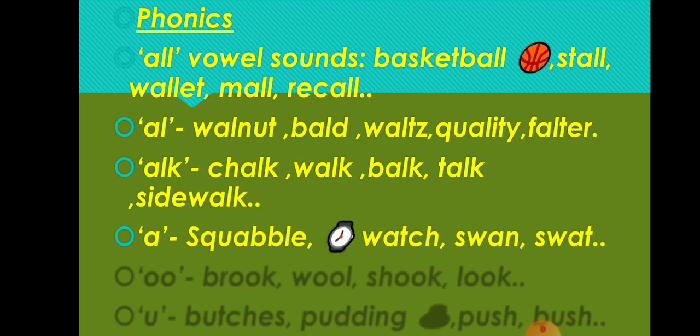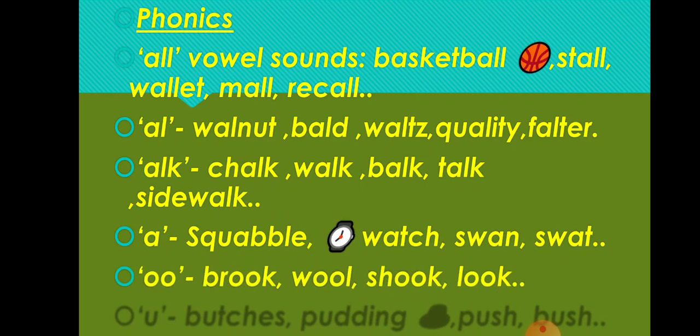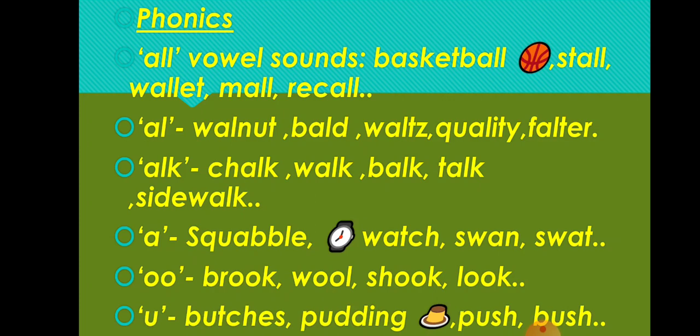Next sounds come to be 'Auk' as in Squabble, Watch, Swan, Swat, etc. Then 'Auk' as in Brook, Oul, Shook, Look. And then 'Oul' as in Putches, Pudding, Push, Bush, etc. These are some short vowel sounds we have come across in unit 5. I have given you some example words. We have more words in our SR. Refer your worksheet book to learn how to use these sounds while writing.